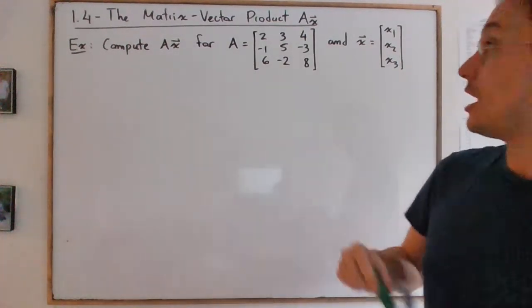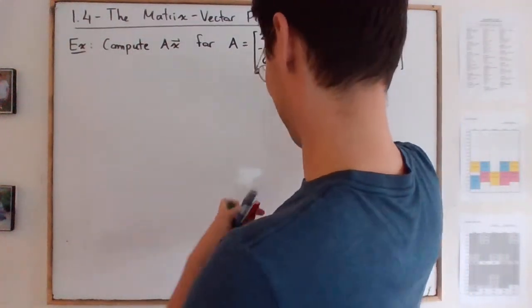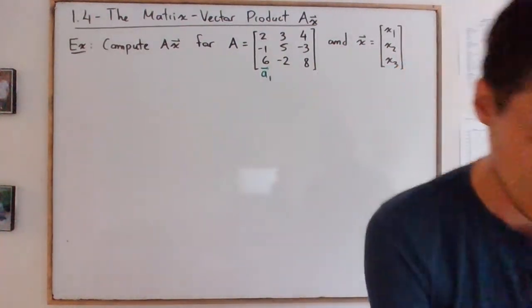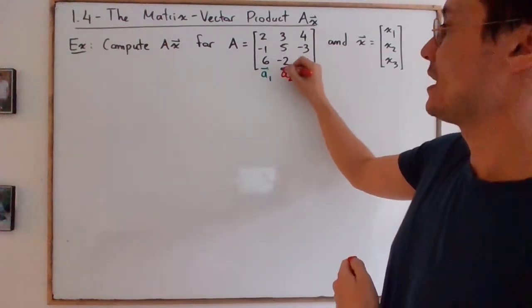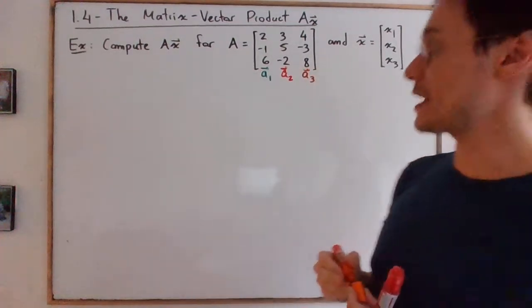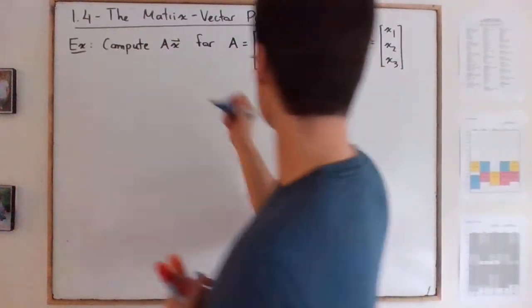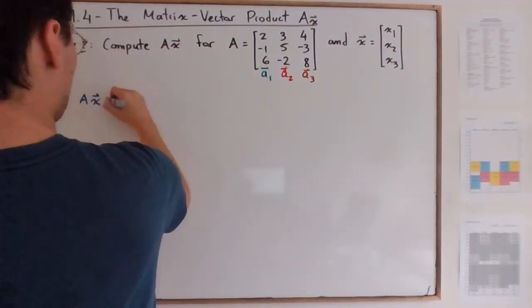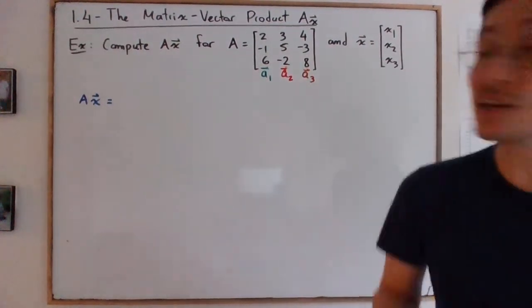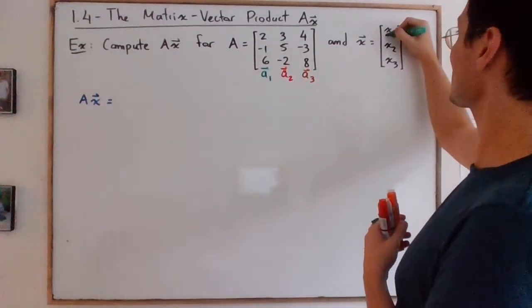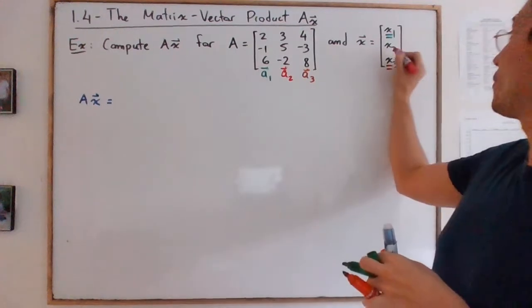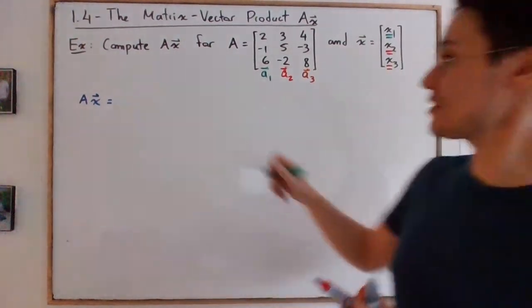So let's say that this is vector A1, this is vector A2, and the vector A3. Then A times x, remember, it is the linear combination of these three vectors by taking the corresponding weights x1, x2, and x3.